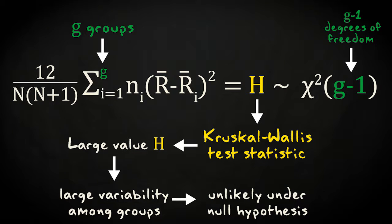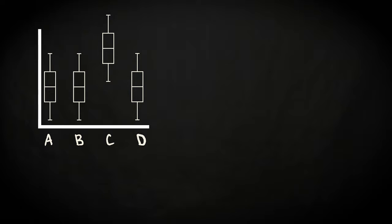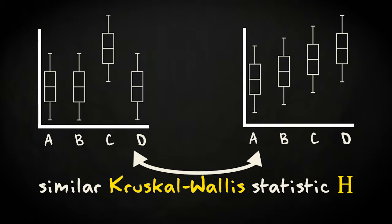Similar to the one-way ANOVA, the Kruskal-Wallis test does not show which groups differ among each other. A large value for the test statistic could arise because a single group stands out while the others are relatively similar, but equally well because all groups differ somewhat amongst each other.